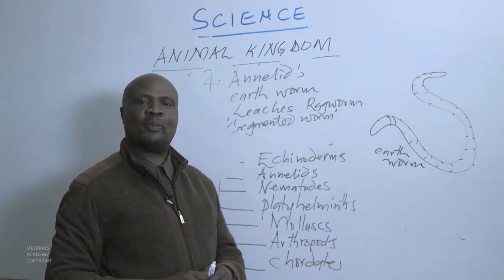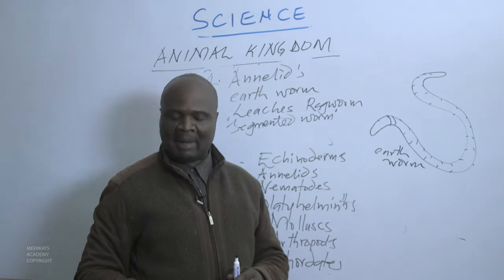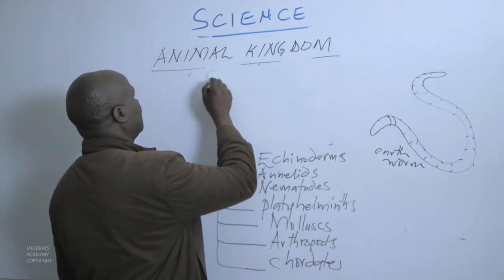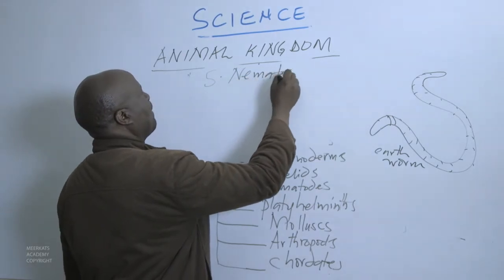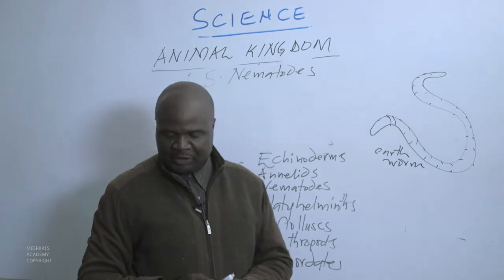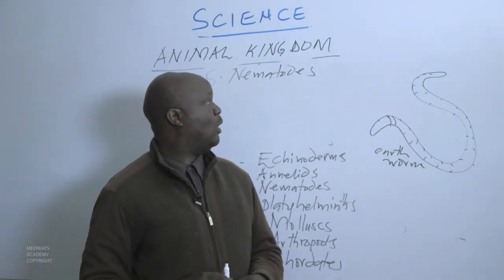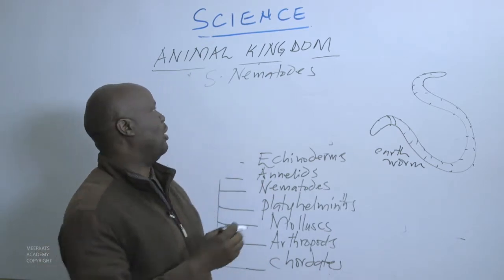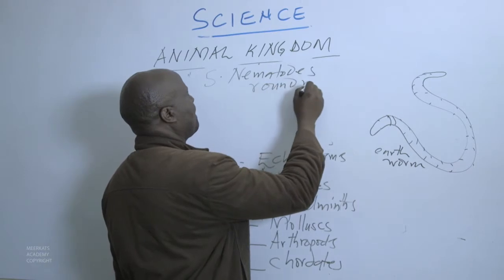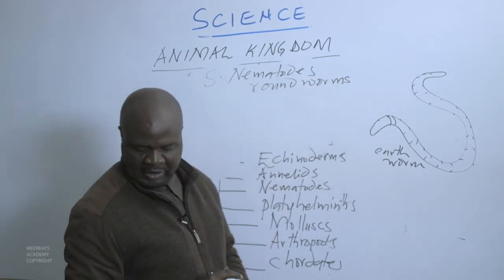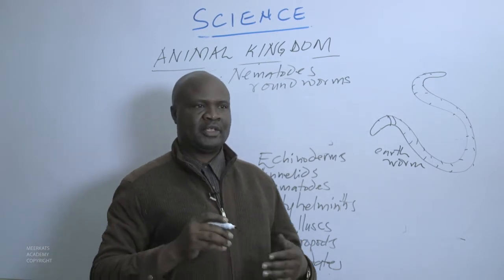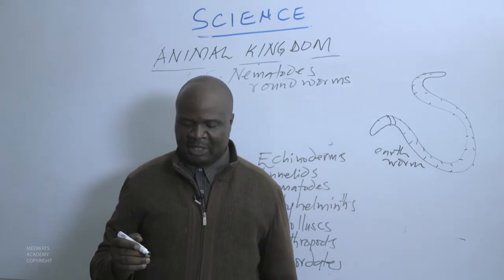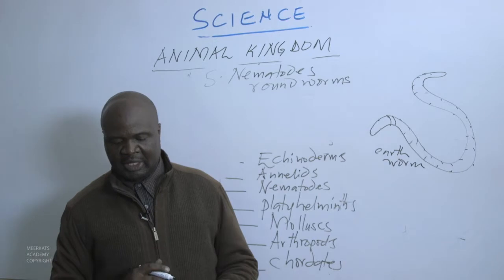From Annelids, we can go to another group called Nematodes — that is group number five. Nematodes are famous for a number of things. Most Nematodes are round worms. They have bilateral symmetry, meaning you can bisect them into two equal parts.